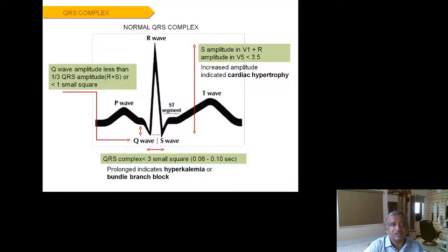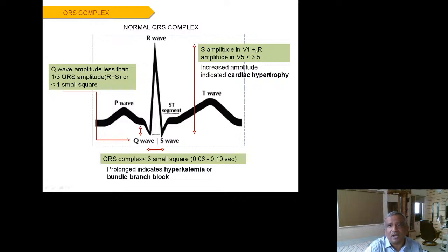The normal QRS complex duration is less than 3 small squares — 0.06 to 0.12 seconds. The Q wave amplitude is always less than 1 small square. The R in V5 plus S in V1 should be less than 3.5 mV. These are the normal QRS complex measurements.